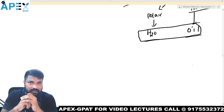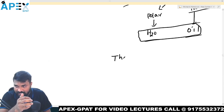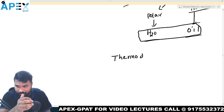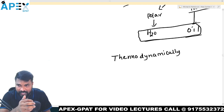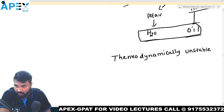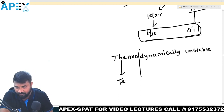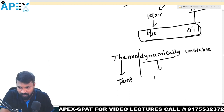The problem is emulsions are immiscible, and that is the bigger problem here because they are thermodynamically unstable. What do you mean by thermodynamically unstable? Thermo means temperature, and dynamic means movement.